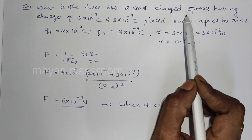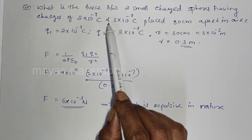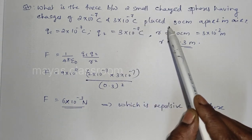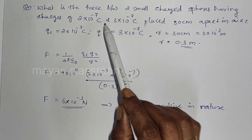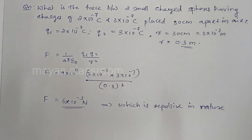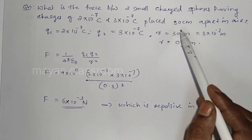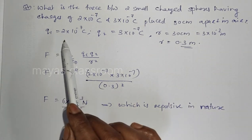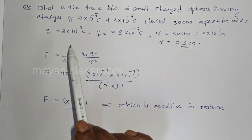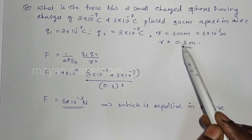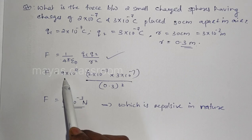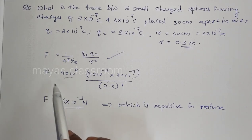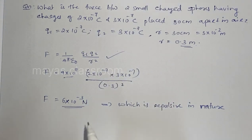Problem: What is the force between two small charged spheres having charges of 2 × 10⁻⁷ C and 3 × 10⁻⁷ C placed 30 centimeters apart? Using F = k·q1·q2/r², with k equal to 9 × 10⁹, the result is 6 × 10⁻³ N. This force is repulsive in nature because both charges are positive.